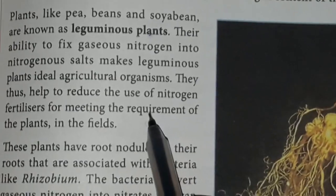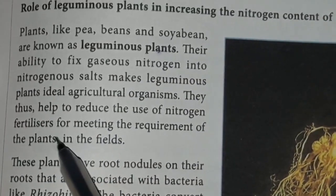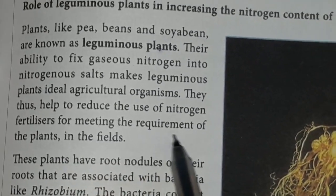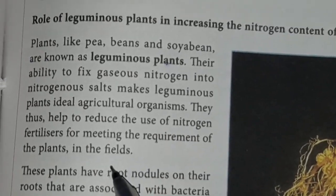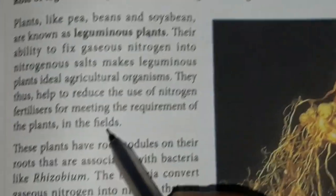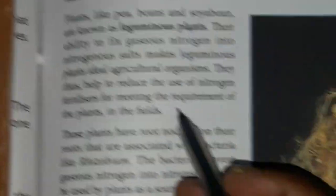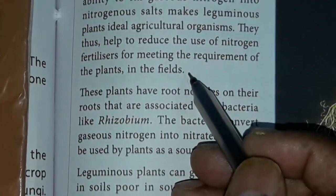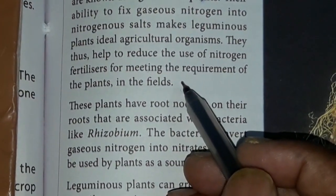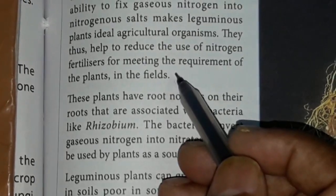Nitrogen के उपयोग को कम करते हैं — fertilizers की जरूरत कम होती है क्योंकि plants को nitrogen की requirement होती है और हम fertilizers के रूप में देते हैं, लेकिन अगर leguminous plants लगाते हैं तो nitrogen fertilizers को कम देने की जरूरत होती है।